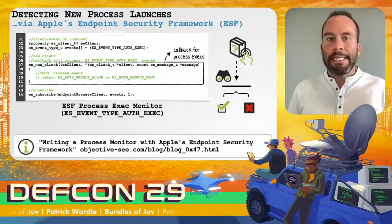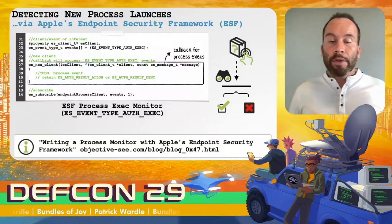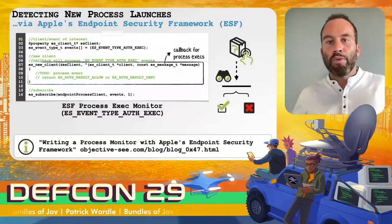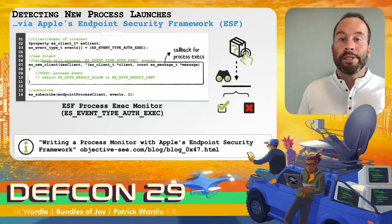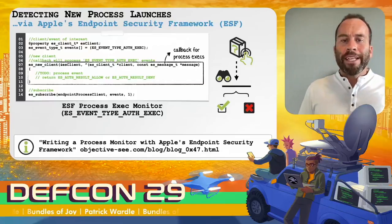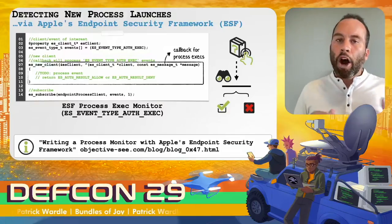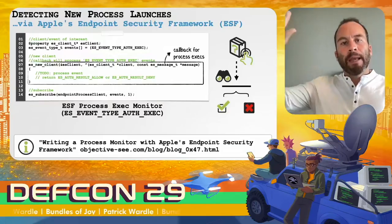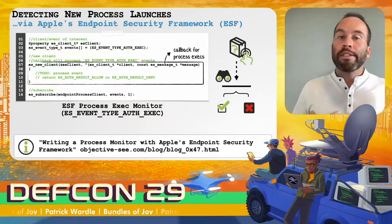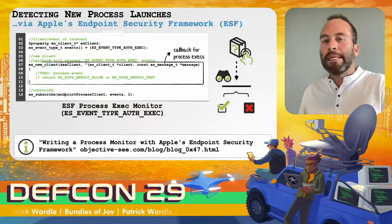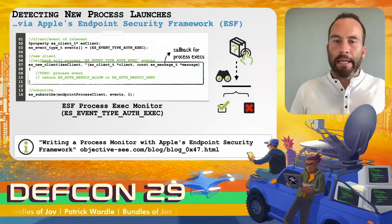This was actually pretty easy to implement. First, we leverage Apple's Endpoint Security Framework, the ESF — a powerful user-mode framework that allows us to register for operating system events such as process launches. Here we register a new endpoint security client and tell it we're interested in the auth_exec event, which invokes our callback any time a process is about to be launched, allowing us to say whether it is authorized or not. I've blogged more about the Endpoint Security Framework — link on the slide.